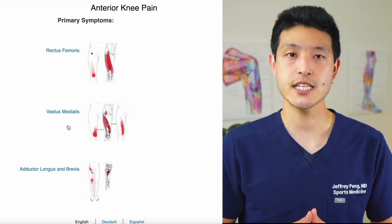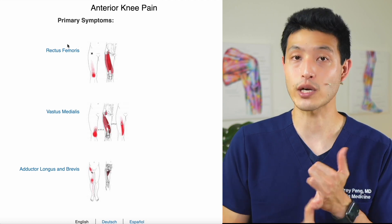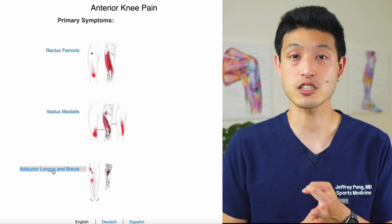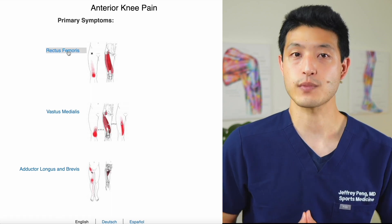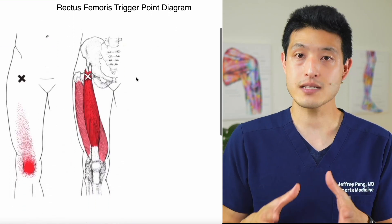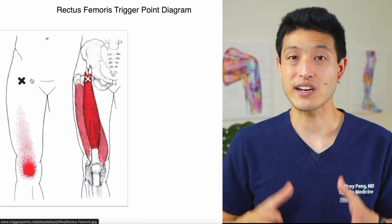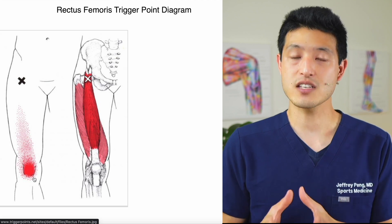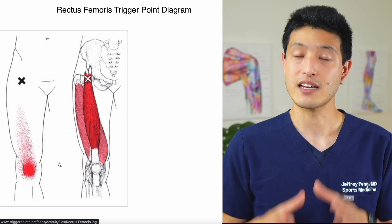For my anterior knee pain, it seems like problem areas could include the rectus femoris, the vastus medialis, and the adductor longus and brevis. I would then click on one of these muscles and try to press around on my own body approximately the area where the X's are. The X marks areas where it is common for trigger points to form. The red is where people experience pain from this trigger point.